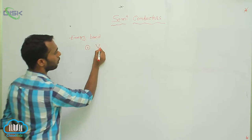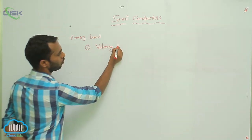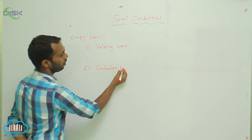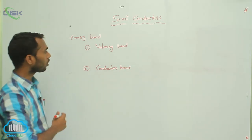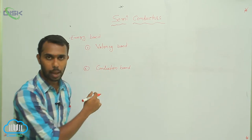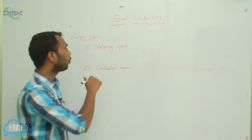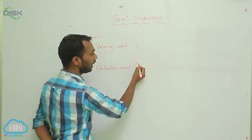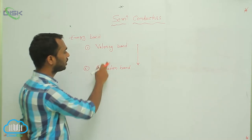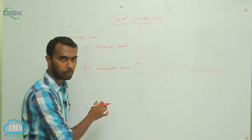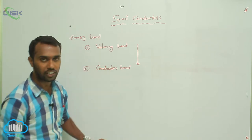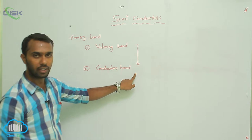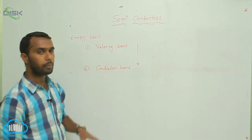One is a valency band and the next one is a conduction band. The valency band consists of valency electrons, so electrons are present in the valency band. If these electrons jump into a higher energy level, that is the conduction band. If these valency electrons jump into the conduction band, then that conducts current. If these electrons are unable to jump, that is an insulator. So this valency band and conduction band is very important.